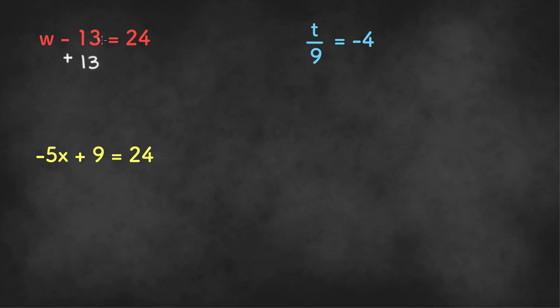But we can't add 13 to only one side of the equation. We have to add it to the other side as well so that it still remains an equation. After adding 13 to both sides, we get w and the 13s cancel out equals 24 plus 13, which is 37. And that's our final answer.